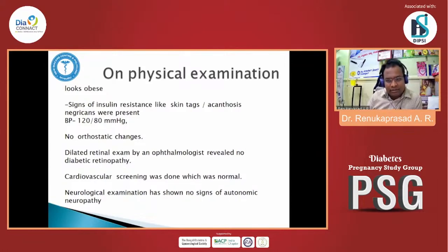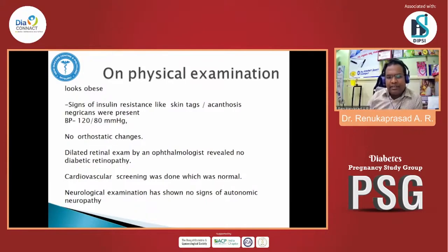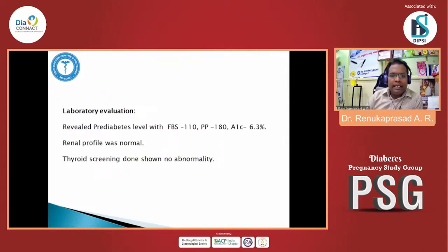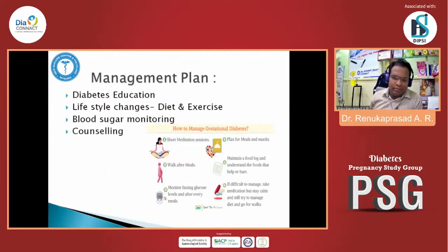On physical examination, she appeared obese with signs of insulin resistance such as skin tags, acanthosis nigricans, and skin changes. Blood pressure was normal with no orthostatic changes. Dilated retinal examination by an ophthalmologist revealed no diabetic retinopathy. Cardiovascular screening was normal. Neurological examination showed no signs of autonomic neuropathy. Lab evaluation confirmed pre-diabetes status: fasting glucose 110 mg/dL, postprandial 180 mg/dL, HbA1c 6.3%. Lipid profile was normal; thyroid screening showed abnormal results.